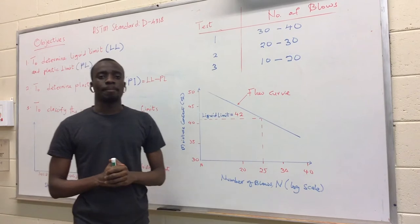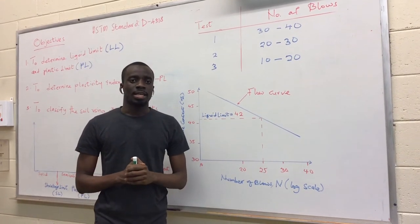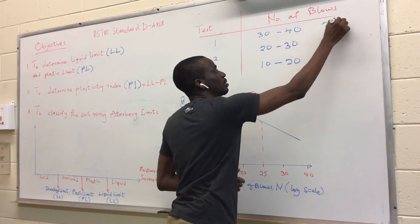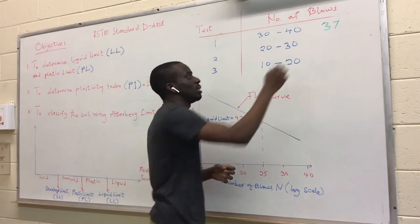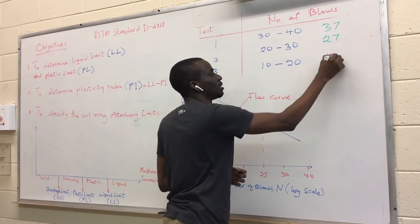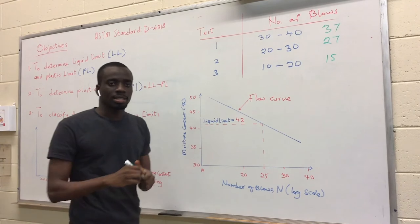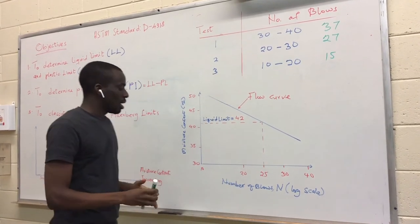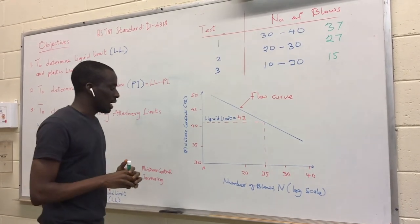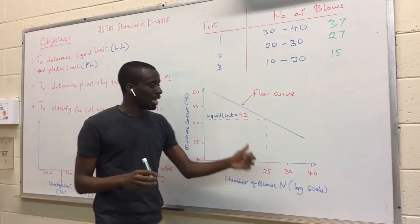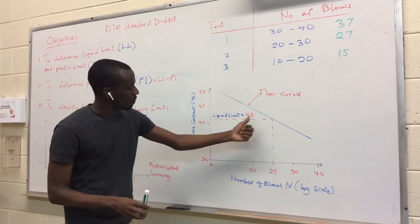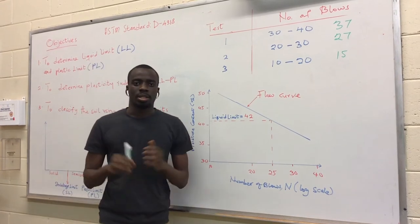We've just completed the liquid limit test and we have the first test falling at 37 blows, the second one fell at 27, and the last one fell at 15. What happens next is that after my sample is oven dried, I will measure the moisture content before I dried it. I plot the number of blows against the various moisture content and I will be able to get the corresponding 25 from that and that becomes my liquid limit.